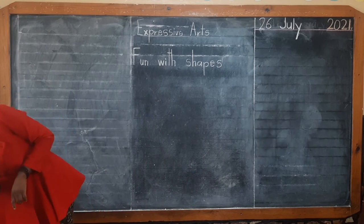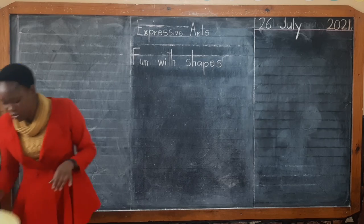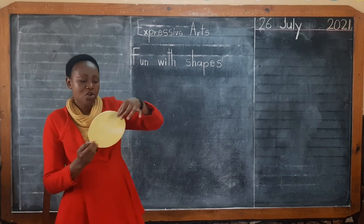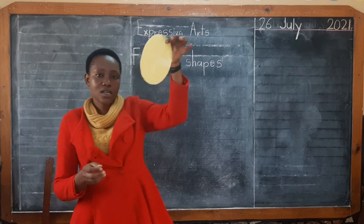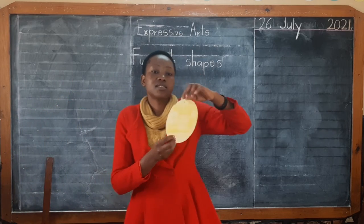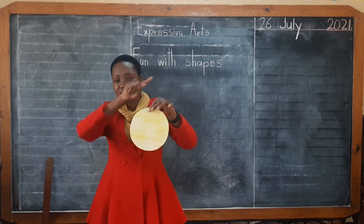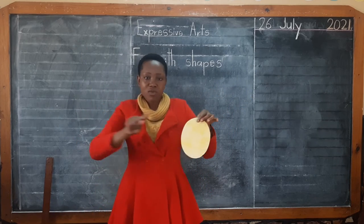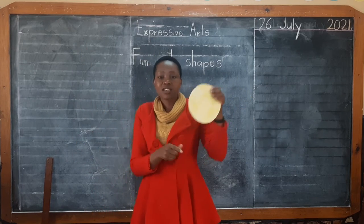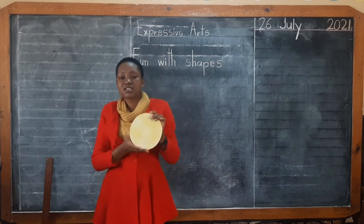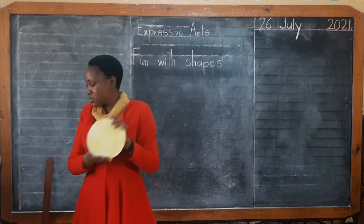The first shape that I showed you was the circle. A circle doesn't have any side — it is just round.